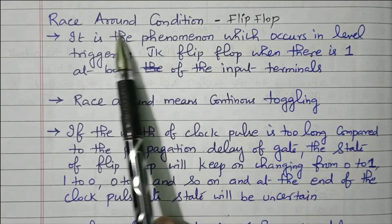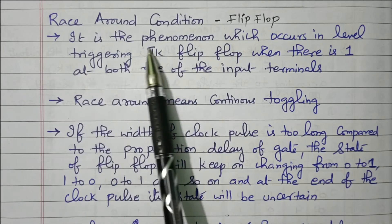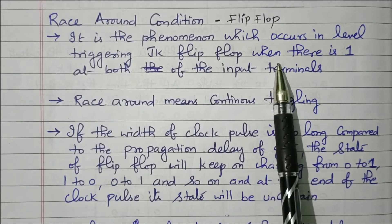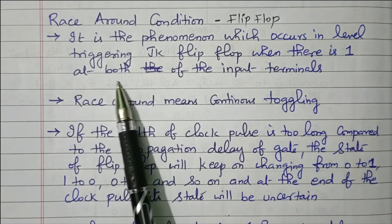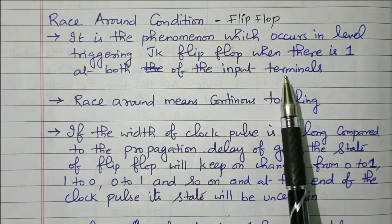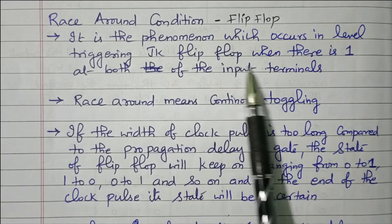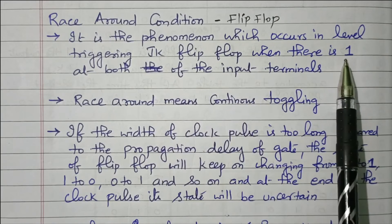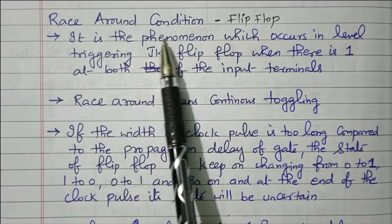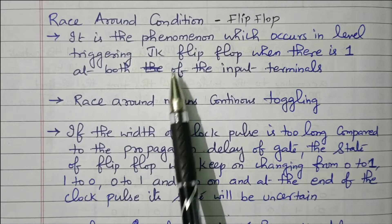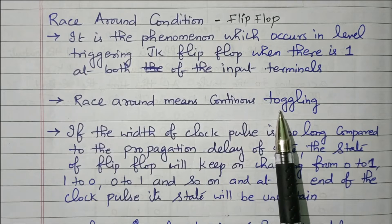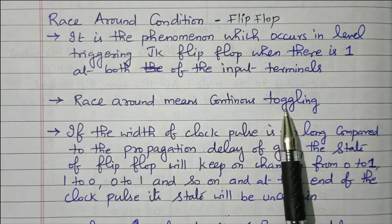What is the race-around condition? It is the phenomenon which occurs in level-triggering JK flip-flop when there is a 1 at both the input terminals. For example, in a JK flip-flop, the J value as well as K value is 1 — both are 1. In that case, the race-around condition exists. Race-around means continuous toggling: the output will toggle from 0 to 1, then 1 to 0, continuously.